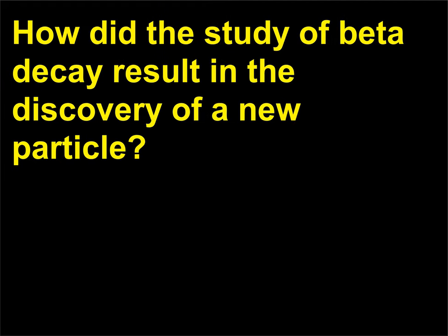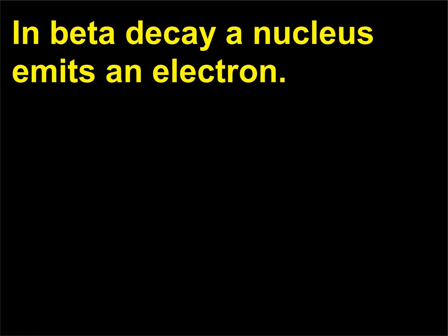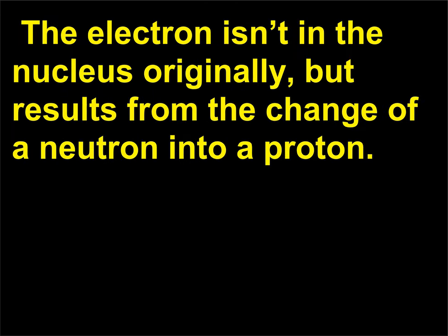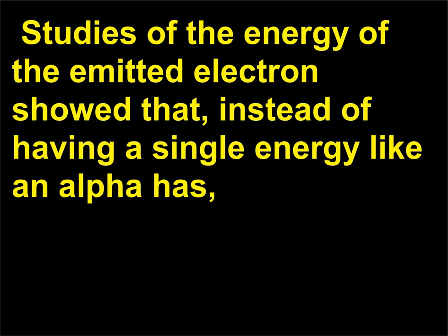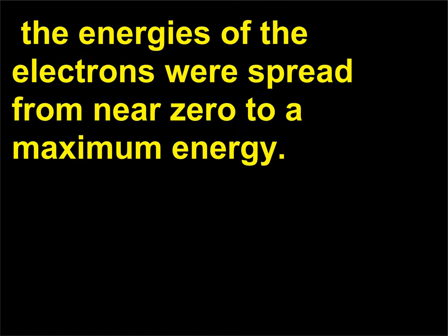How did the study of beta decay result in the discovery of a new particle? In beta decay a nucleus emits an electron. The electron isn't in the nucleus originally, but results from the change of a neutron into a proton. Studies of the energy of the emitted electron showed that instead of having a single energy like an alpha has, the energies of the electrons were spread from near zero to a maximum energy.